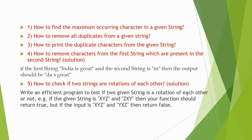The next question is: how to remove characters from the first string which are present in the second string. For example, the first string is 'India is great' and the second string is 'in', then the output would be 'da s great' — they are replacing 'in' with blank. You need to understand this: remove characters from the first string which are present in the second string, replacing those characters with blank.